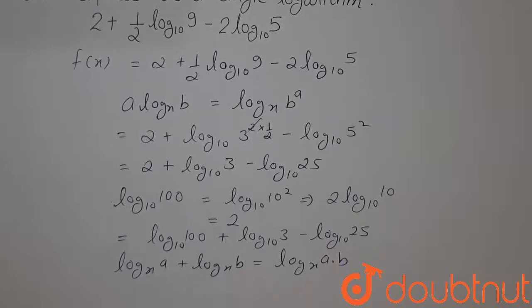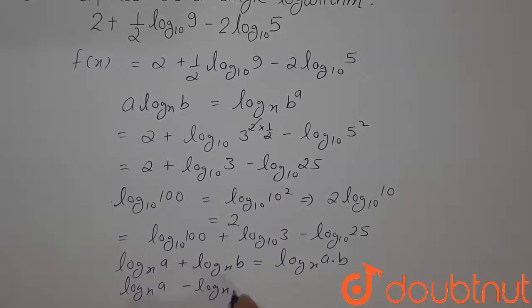Similarly, another property is that log to the base x, a minus log to the base x, b can be written as log to the base x, a by b.